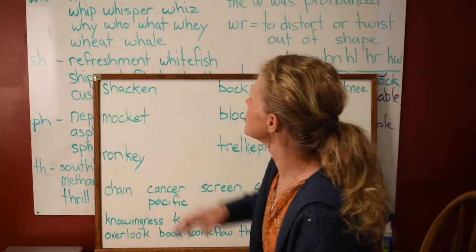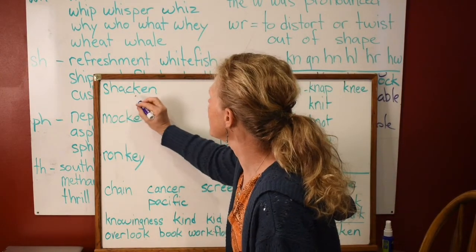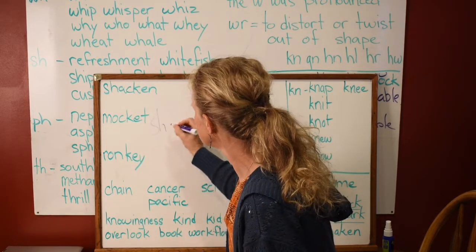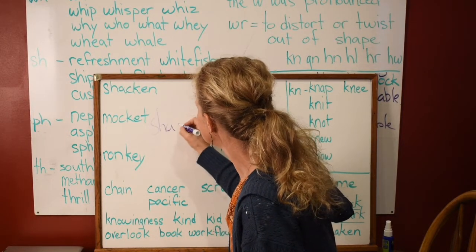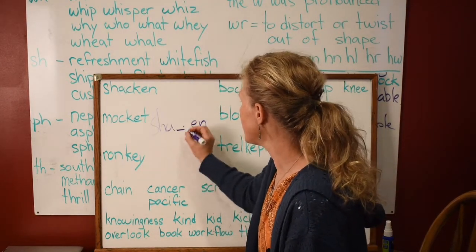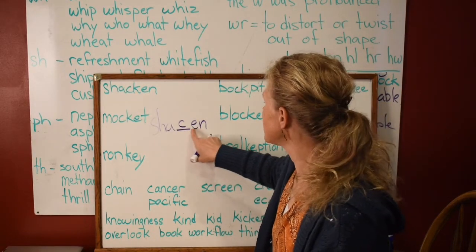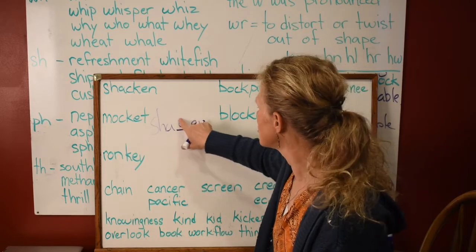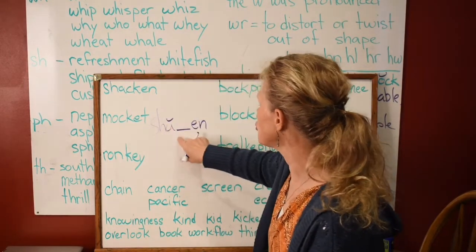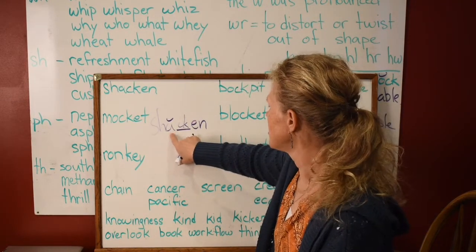Now this word says 'shakin.' How do we know we have to spell that with CK? Can we put a C there? No — it would say 'shasin' because the E forces a C to say 'ss.' We know that this is a short vowel, so it has to be CK because this is a short vowel.